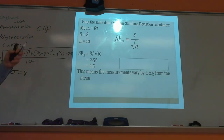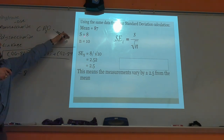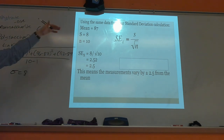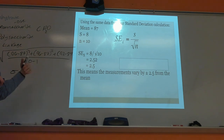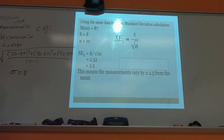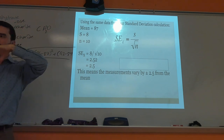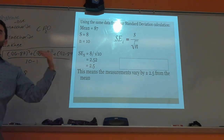The formula for standard error of the mean is on your formula sheet. You take your standard deviation and divide by the square root of your sample size n. Using the same numbers from the quiz example, the standard error of the mean comes out to 2.5. That means if you compared your quiz scores to multiple other AP Bio teachers, the averages would vary by plus or minus 2.5.